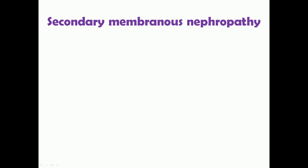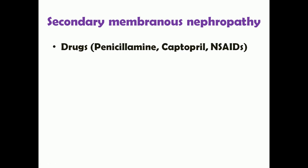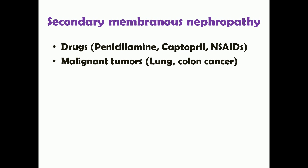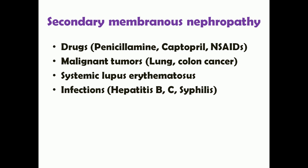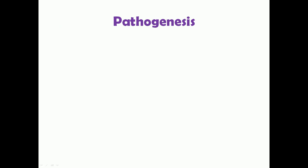Secondary membranous nephropathy occurs following something else. Drugs such as penicillamine, captopril, and NSAIDs taken chronically may cause it. Patients with malignant tumors such as lung or colon cancer are more prone to develop it. In SLE there is increased risk, and chronic infections such as hepatitis B, hepatitis C, and syphilis also increase the risk of developing membranous nephropathy.